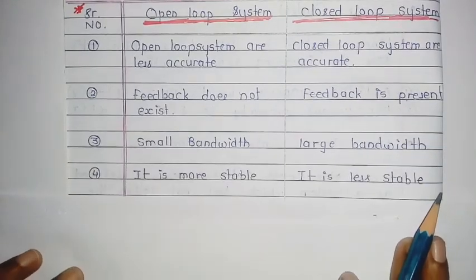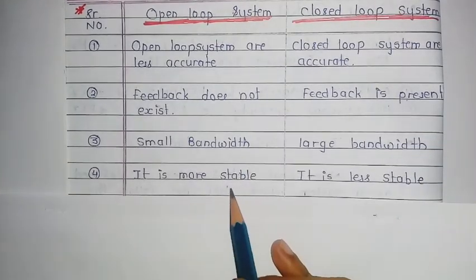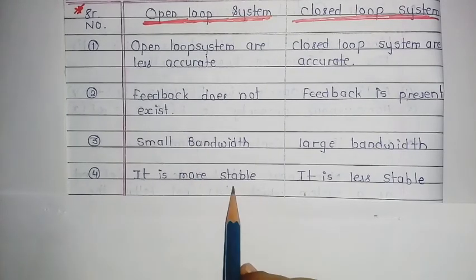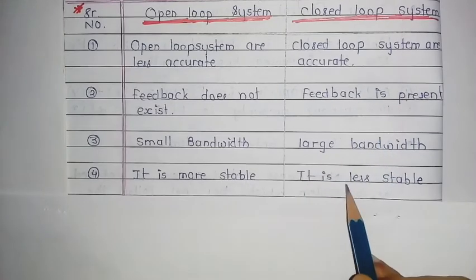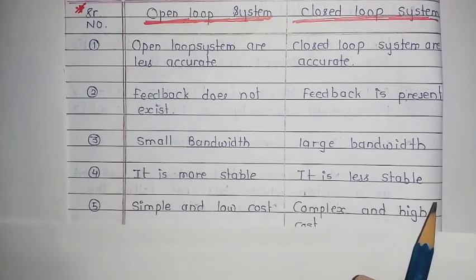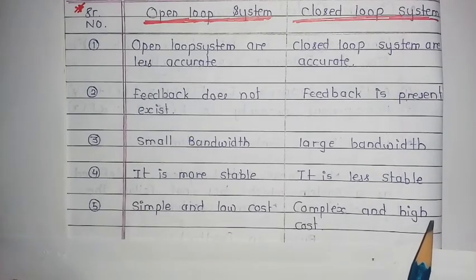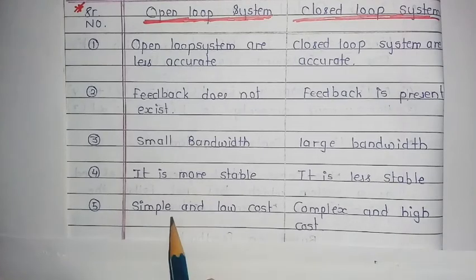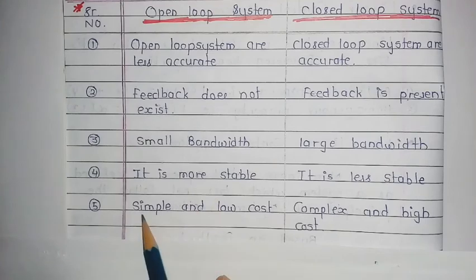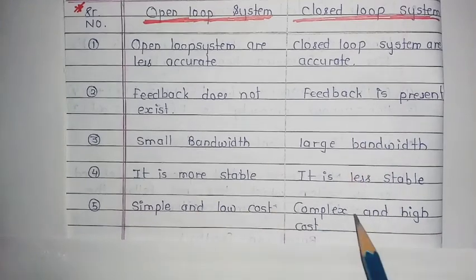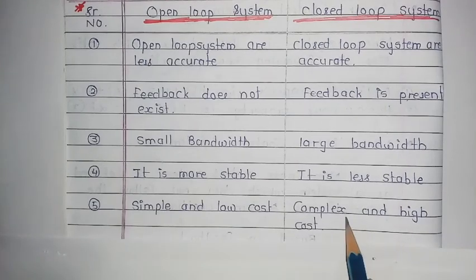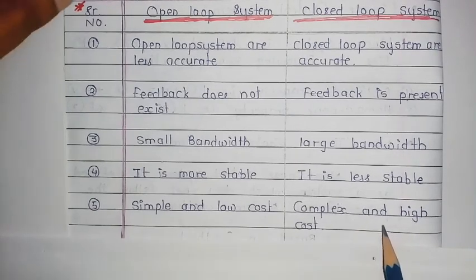The fourth point is stability: the open loop system is more stable, and the closed loop system is less stable. The fifth point is cost: the open loop system is simple and low cost, while the closed loop system is complex and high cost.